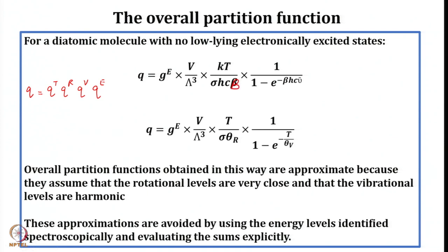The vibrational contribution is given by 1 divided by (1 minus exponential of minus beta·hc·nu-bar), where beta is 1/KT, H is Planck's constant, and nu-bar is the wavenumber of that particular vibration. The electronic contribution is usually equal to the degeneracy of the ground state. So the overall molecular partition function is: g_e · (V/lambda³) · (KT/sigma·hcB) · [1/(1 − exp(−beta·hc·nu-bar))].